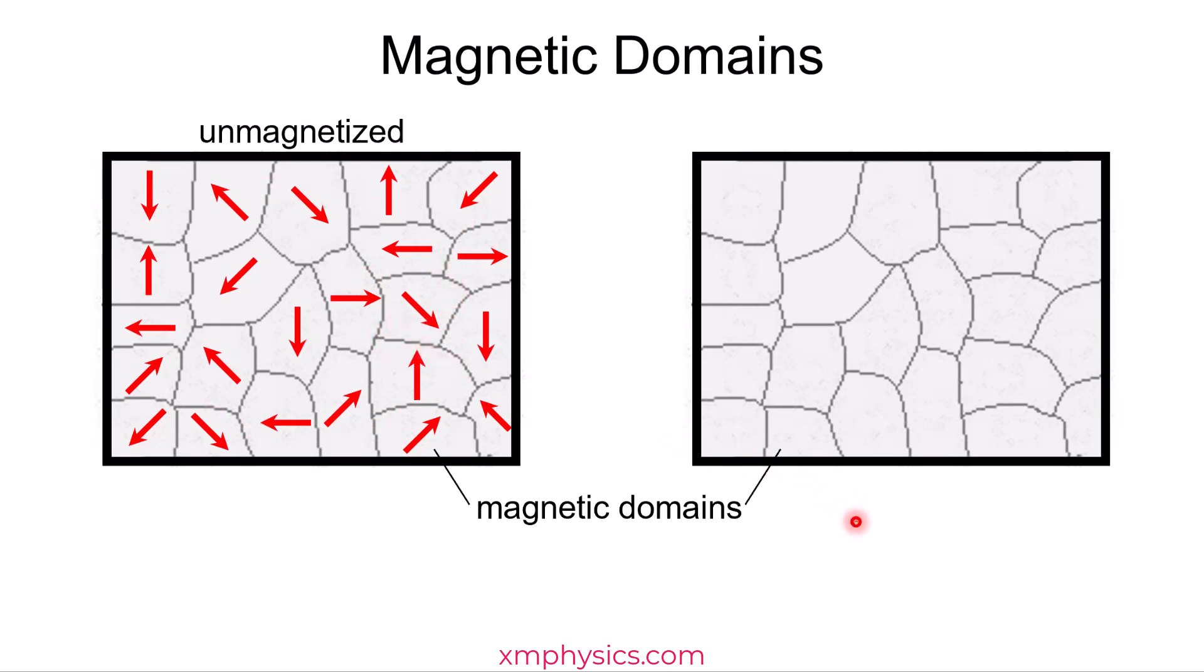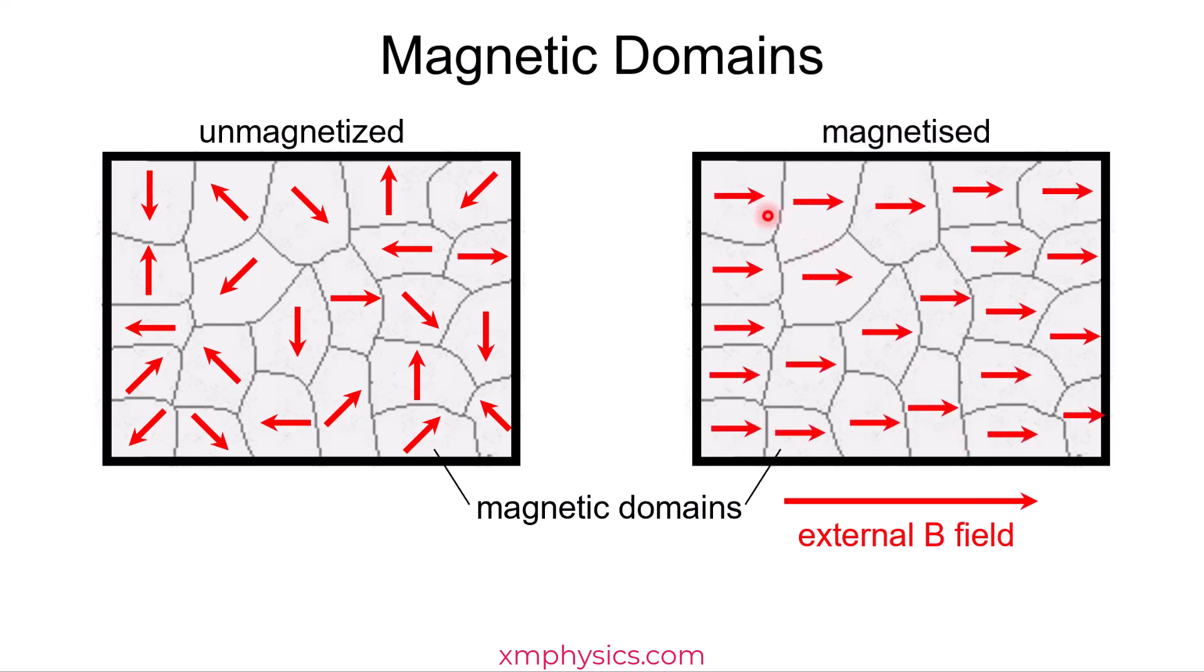However, if you apply an external magnetic field, so that solenoid is providing that external magnetic field. When you have the external magnetic field, the magnetic field of all the magnetic domains will start to align in the same direction as the external magnetic field. Now, all the magnetic fields of all these magnetic domains sum up to be a very large magnetic field. In fact, the resultant magnetic field is often many thousands of times stronger than the external magnetic field that triggered it.